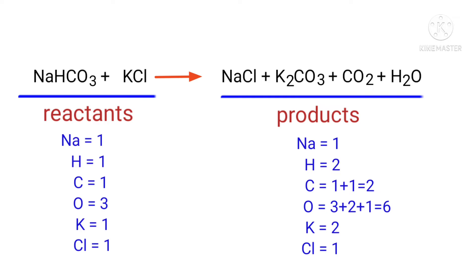The number of atoms are not balanced on both sides. To balance the chemical equation we need to make use of coefficients. A coefficient is a number that we place in front of a chemical formula.